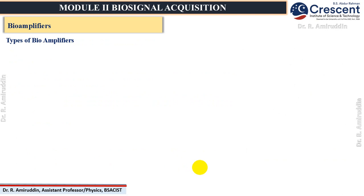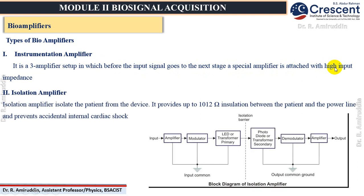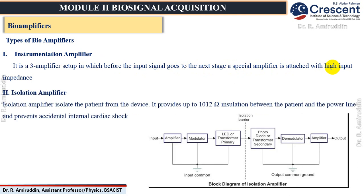There are two important types of bio-amplifiers. The first is the instrumentation amplifier — a three-amplifier setup in which, before the signal goes to the next stage, it comprises an additional specialized amplifier attached with high input impedance. The second is the isolation amplifier, which isolates the patient from the device. An isolation barrier is placed between the input signal stage and output signal stage, providing up to 10¹² ohm insulation between the patient and the power line, thereby preventing any kind of accidental shock to the patient.